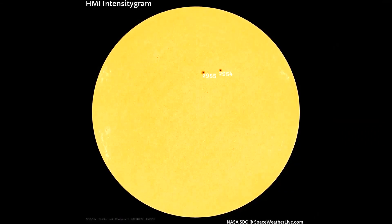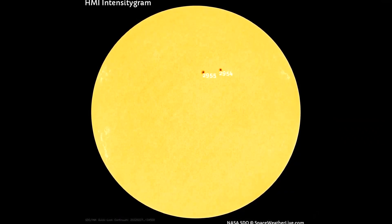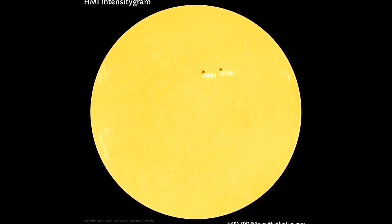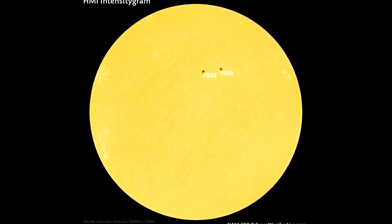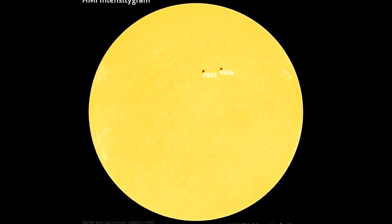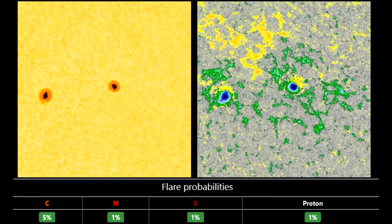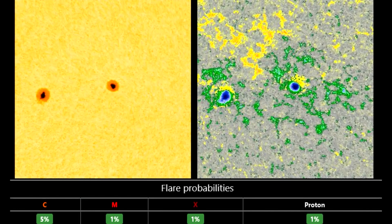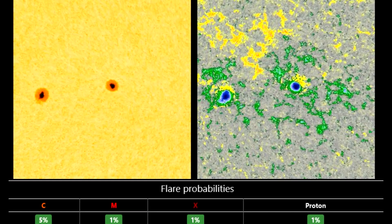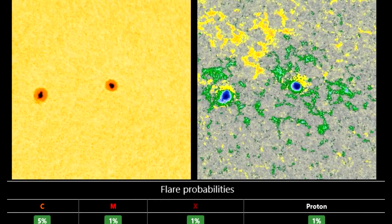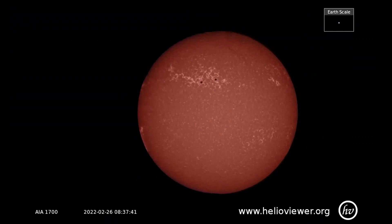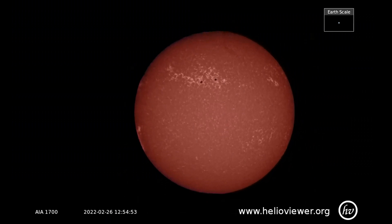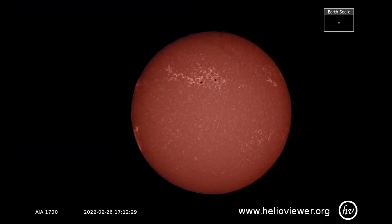On this HMI intensity gram chart, two sunspot regions are observed on the Earth-facing side of the Sun. Both are alpha classified, of the unipolar sunspot group, which means they are of a low possibility of creating a solar flare.